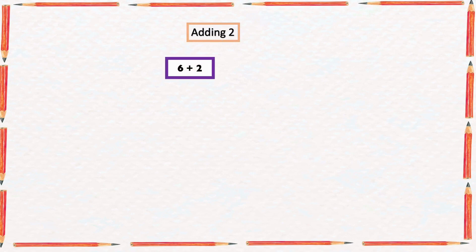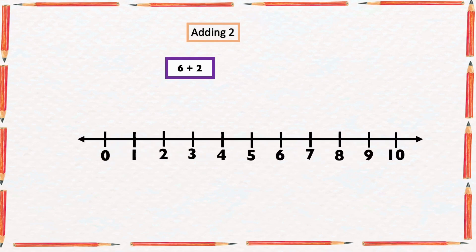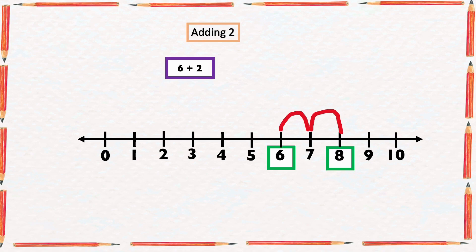Find the sum of 6 and 2. We are going to do it using a number line. We are going to start from the bigger number 6 and count 2 numbers forward: 1, 2. The arrow ended at 8. So the sum of 6 and 2 is equal to 8.